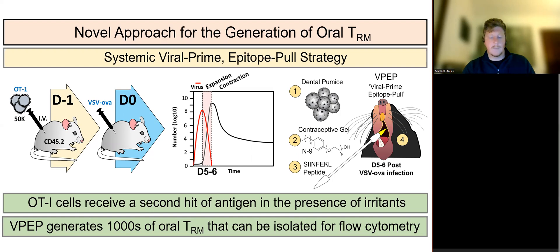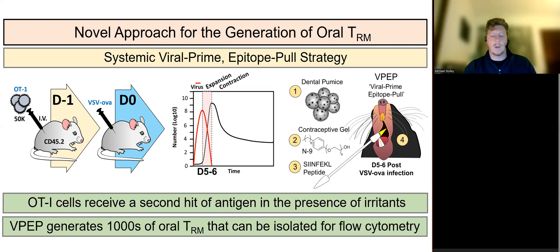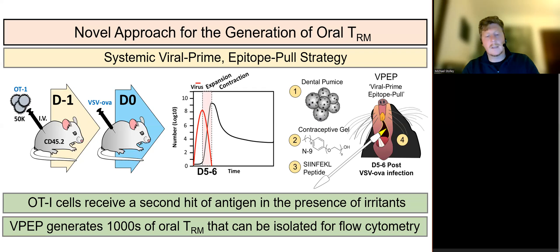For this, T-cells of a known antigen specificity were expanded in congenically mismatched host mice through a systemic viral infection, and subsequently pulled into the oral mucosa five to six days later by swabbing the oral surfaces of anesthetized mice with cognate antigen dissolved in irritants. Our VPEP strategy yielded several hundred to thousands of oral TRM, which could be isolated for flow cytometric analysis.